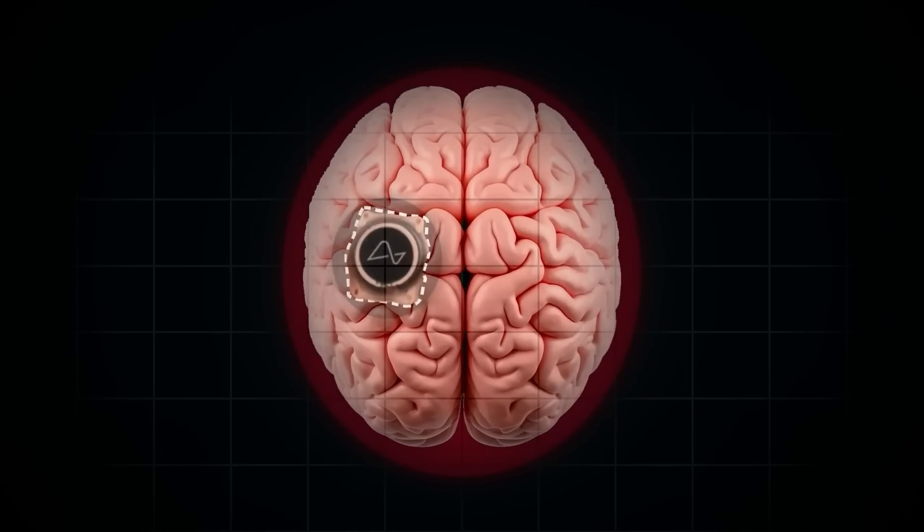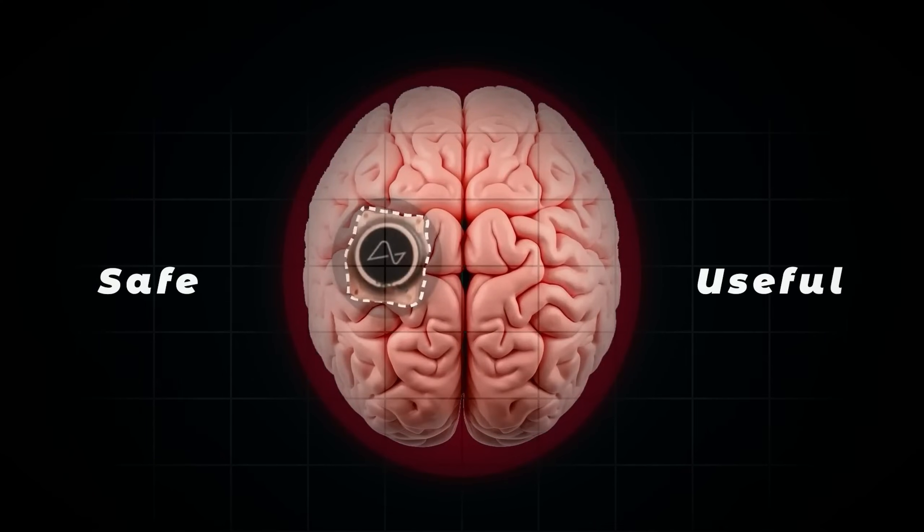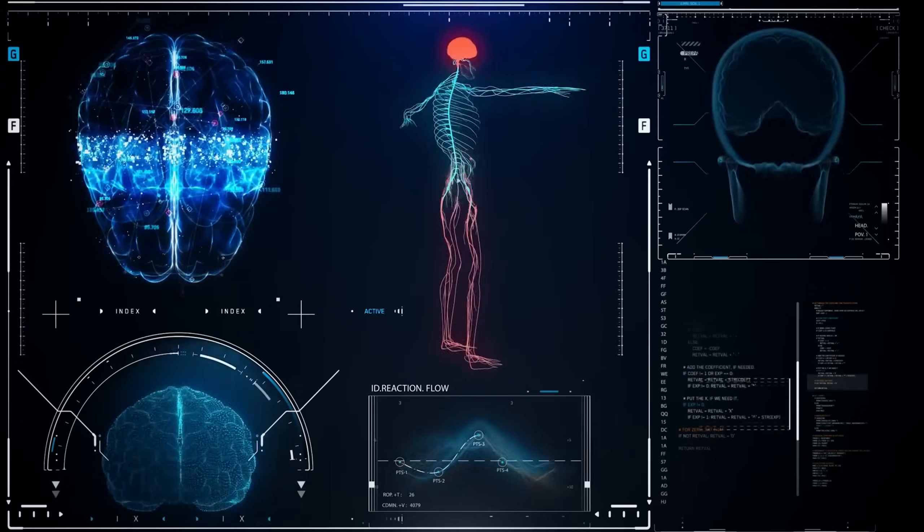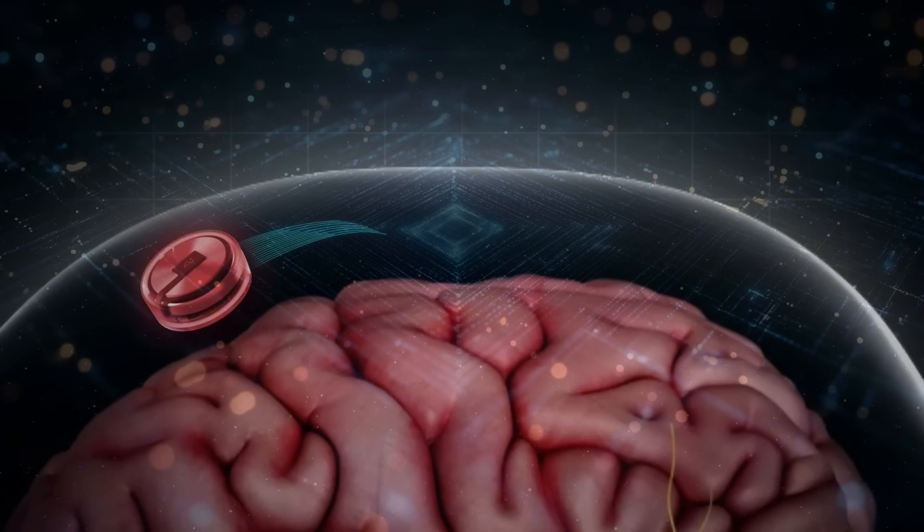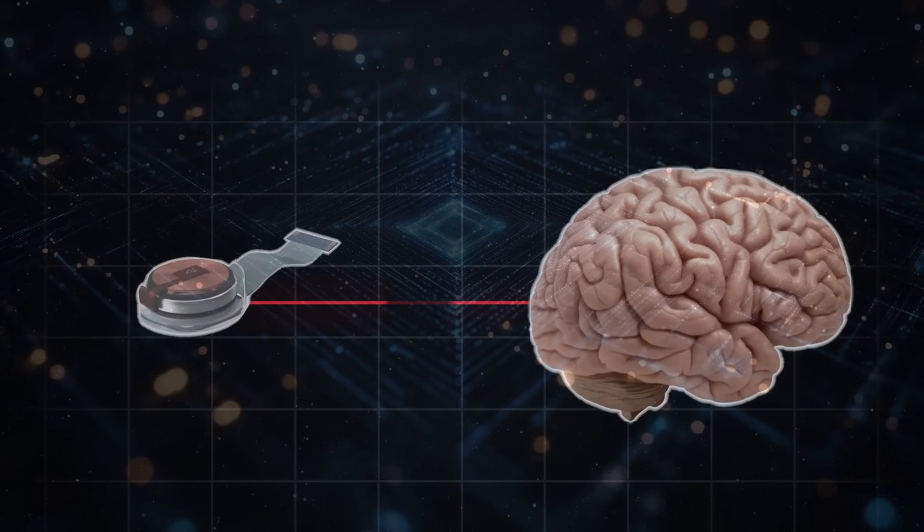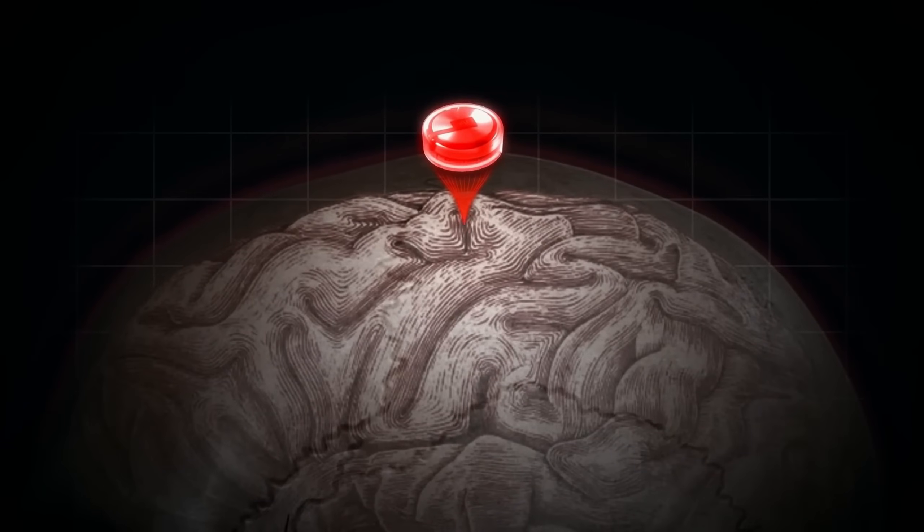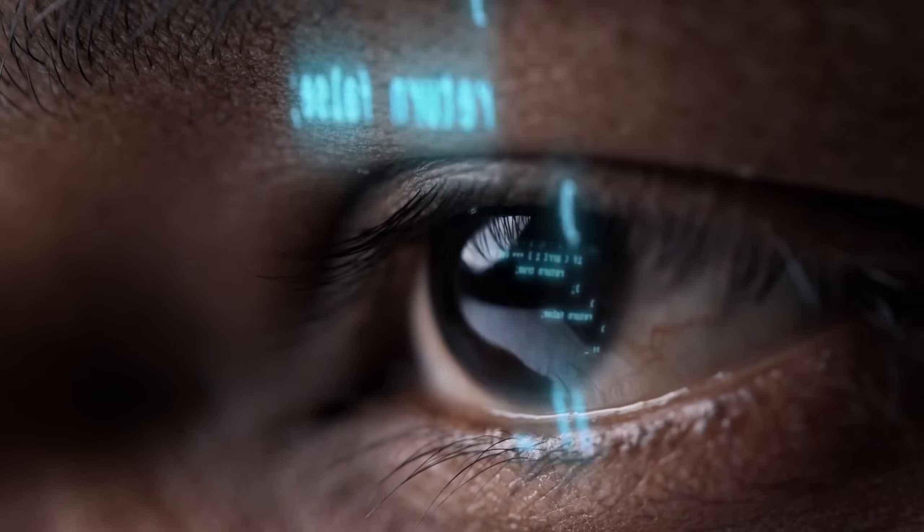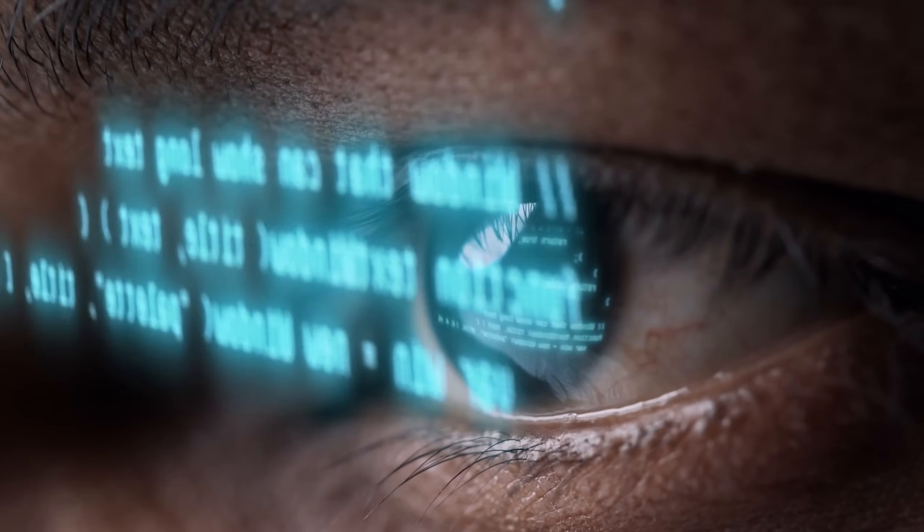This year's successful second chip shows a big step forward in brain technology, which could change how we treat paralysis and other brain problems. Neuralink is working to make their technology better by learning from the first tests and showing good early results. This could change how we treat brain problems and even improve how we think and interact with machines.